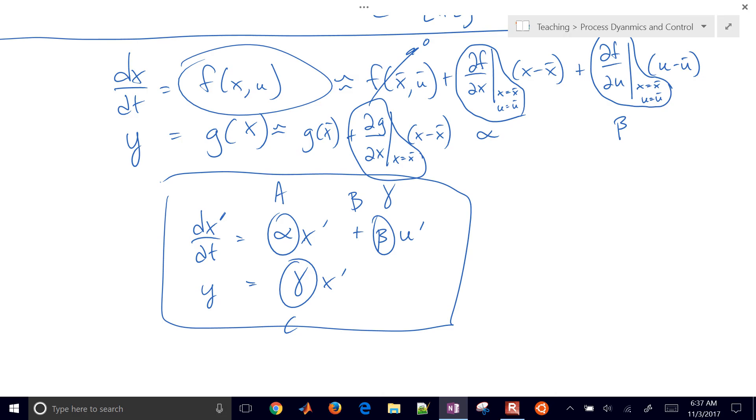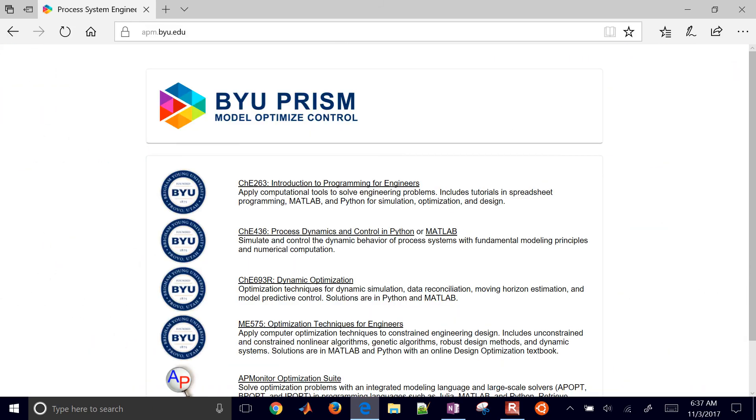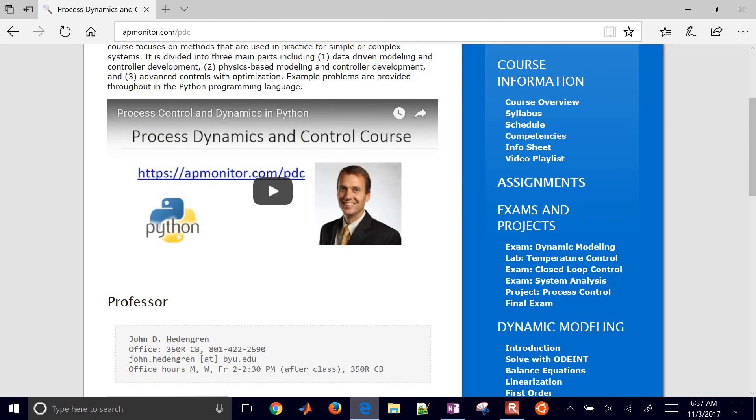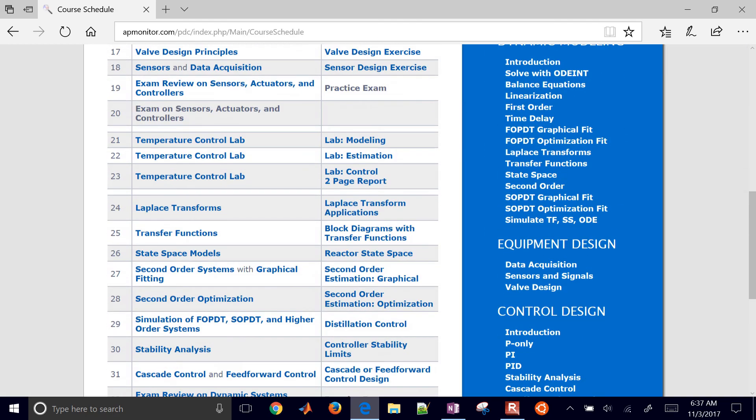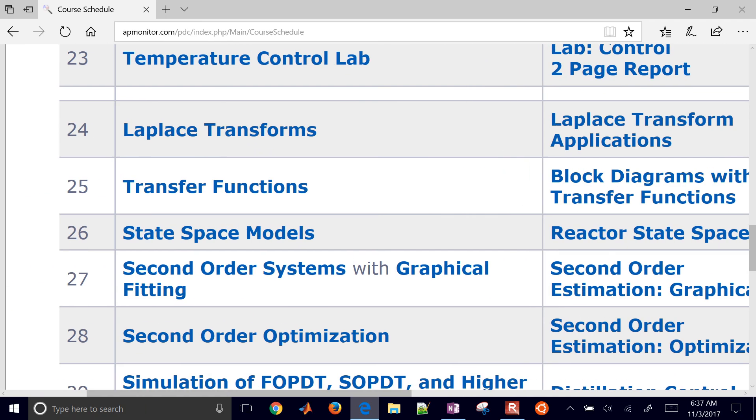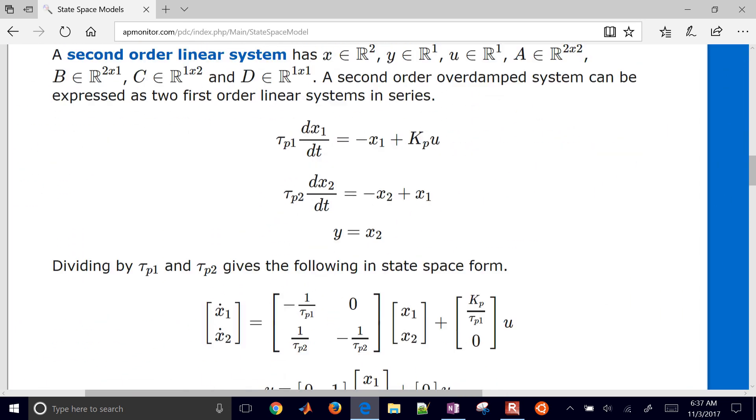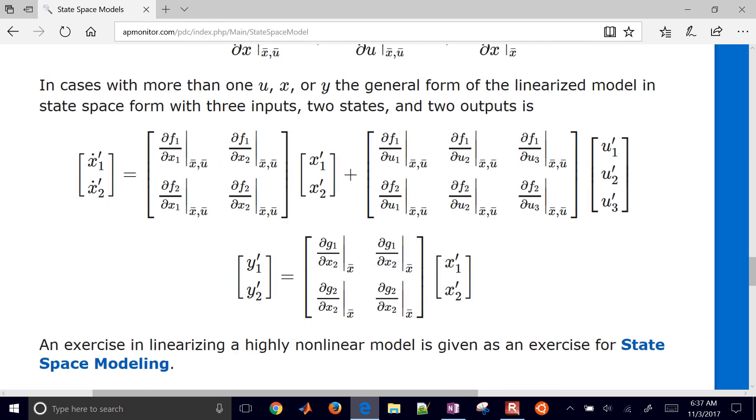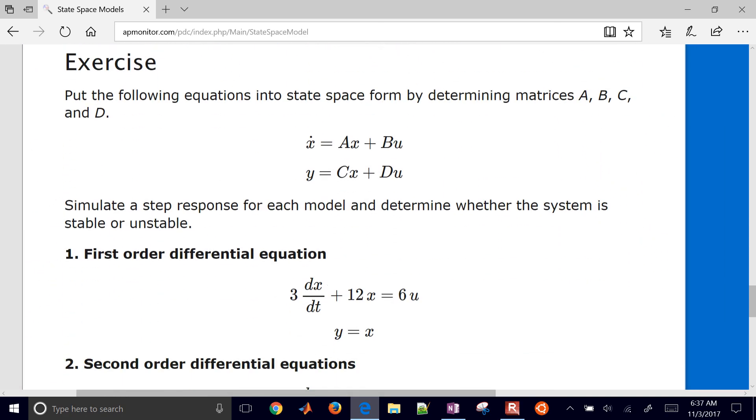So just some additional content on this. If you just come to apmonitor.com, this is listed under the Process Dynamics and Control course. And if you go down to Assignments, you'll see an assignment on this as well, but also some additional material on state space models. The information that we just showed here on state space models, and then a number of examples as well. So here's the general nonlinear system for state space. As I mentioned, you just take the derivative with respect to each variable and then put it into this matrix form. And then here are a few exercises as well. You have one through four here.